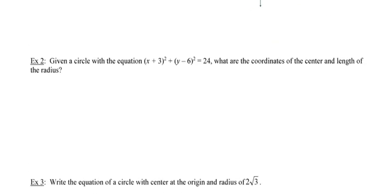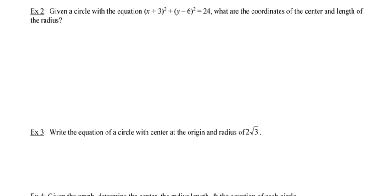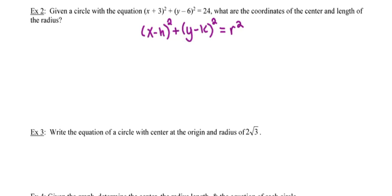In this first example, they're giving us the equation of the circle and asking us to determine the coordinates of the center and the length of the radius. I'll recall the general formula: (x minus the x value of the center) squared plus (y minus the y value of the center) squared equals r squared. I notice that the 3 and h go together, the 6 and k belong together, and 24 and r squared also go together. I have to be careful of the signs — each term in parentheses is being subtracted.